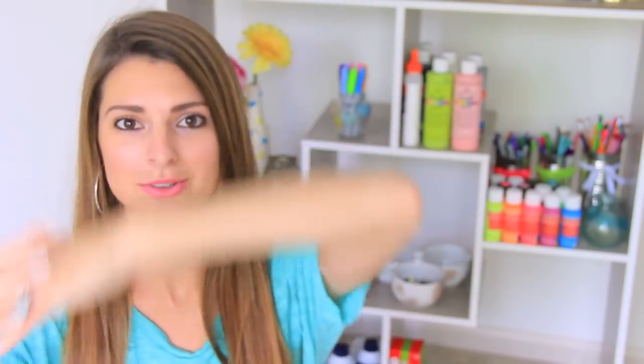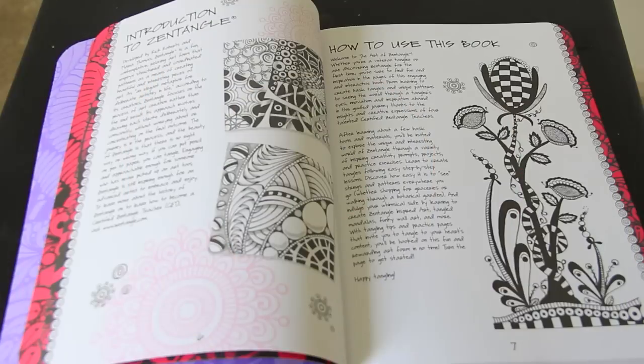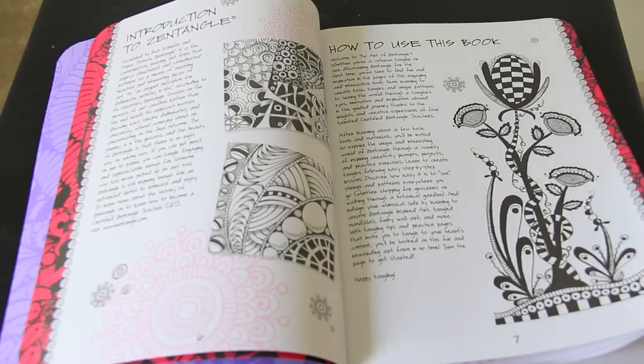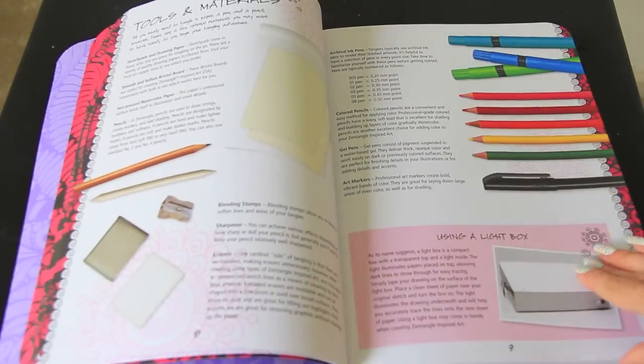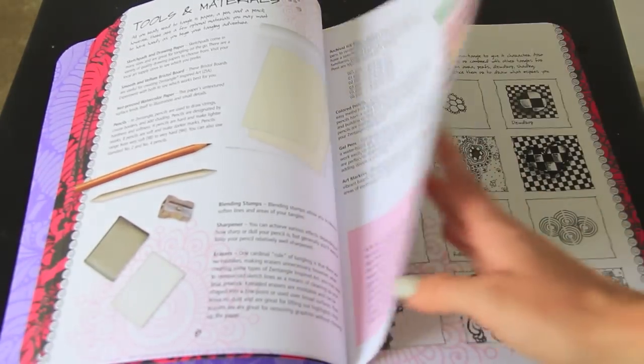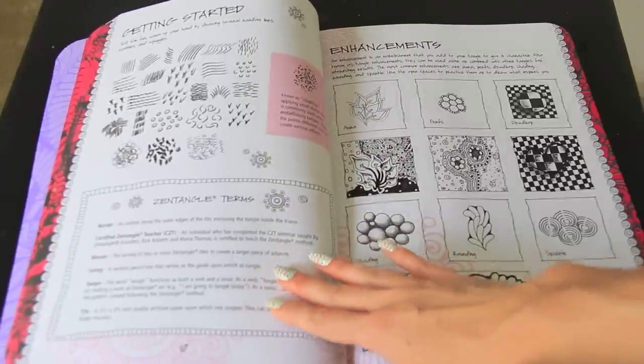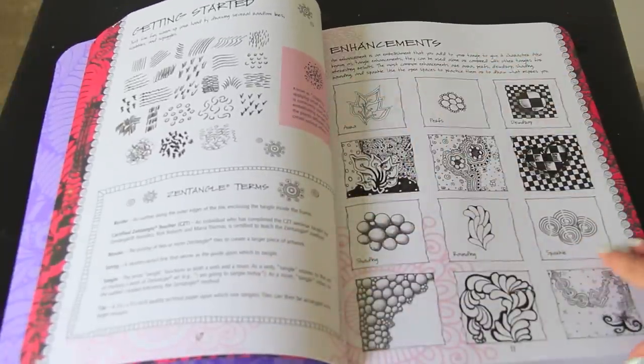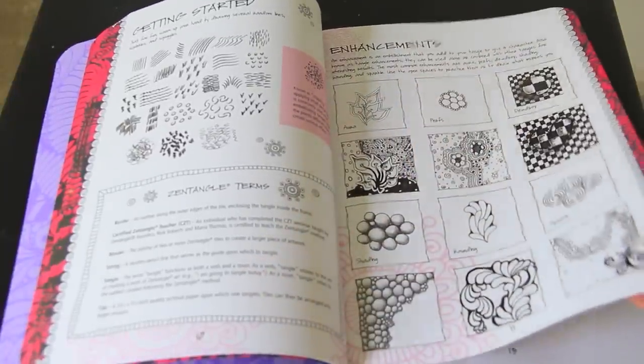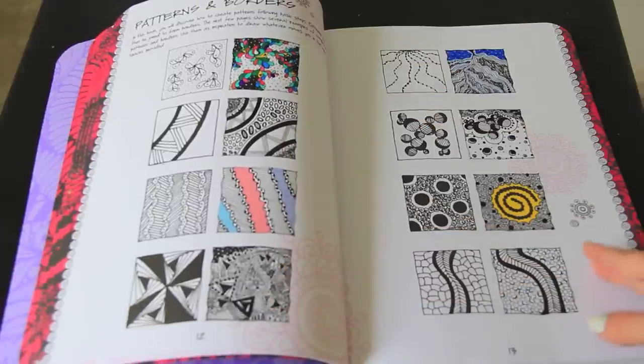I feel like this is what a Zentangle would look like as a dance. I already went over the introduction and the first few pages of drawings in my previous video on Zentangling. So if you haven't seen that, the link is in the description box of this video.